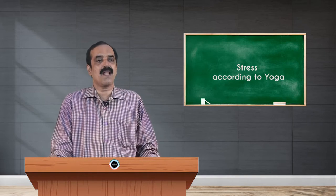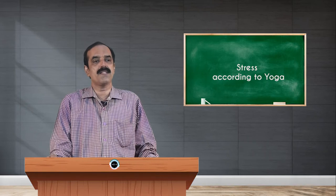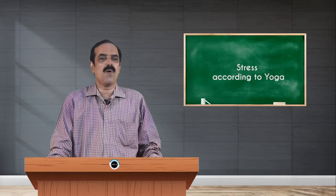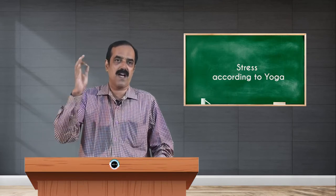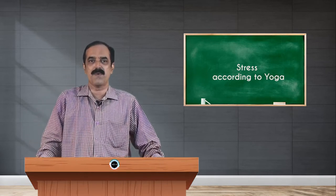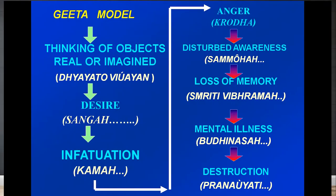This is the Yoga Vasishtha explanation about stress. From the Bhagavad Gita, Krishna explains beautifully how adhi — stress — comes: repeated thinking of an object leads to attachment; attachment leads to desire; desire leads to infatuation and lust — kama. As he says: 'Dhyayato vishayan pumsah sangaste shupajayate, sangat sanjayate kamah, kamat krodho abhijayate.'